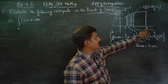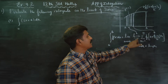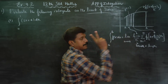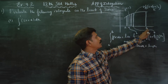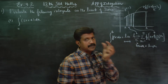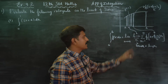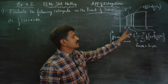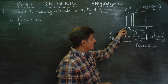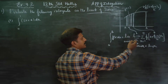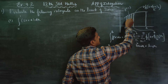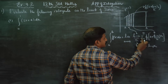What is b minus a by n? This is the breadth of each rectangle. For example, if a is 2 and b is 12: 12 minus 2 is 10. If you divide by 10, the breadth is 1. If you divide by 100, 10 divided by 100 is 0.01. So b minus a by n is the breadth of each rectangle.